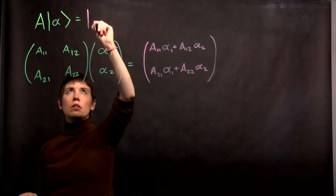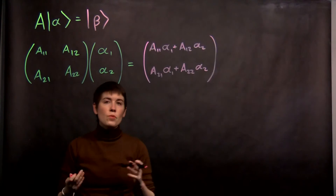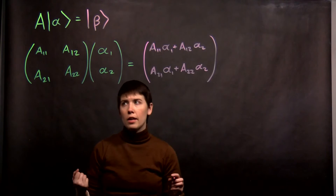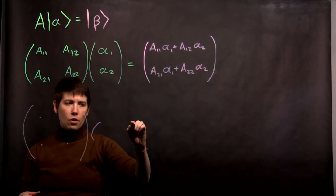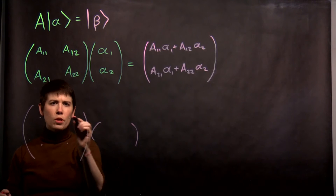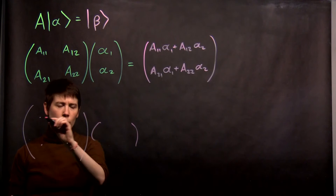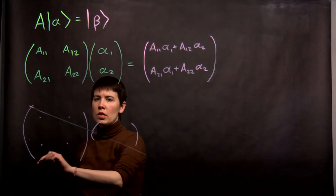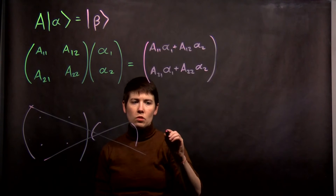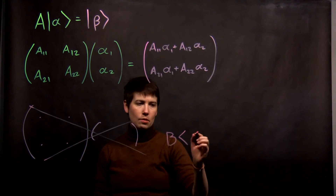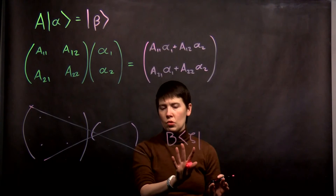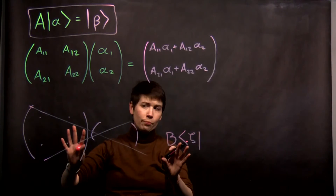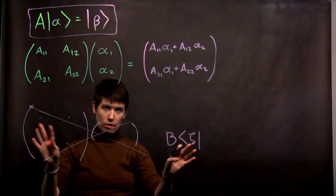So we get another ket — I could write this as beta; we get a new state. Something interesting to note is that this wouldn't work if we tried to do it the other way. You're not generally going to see an operator applied to a ket state from the right. Focus on the form where the operator is to the left of the ket state — we would have a very different form if our operator were to the left of a bra state.